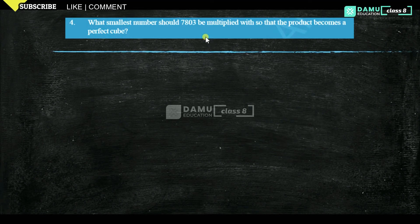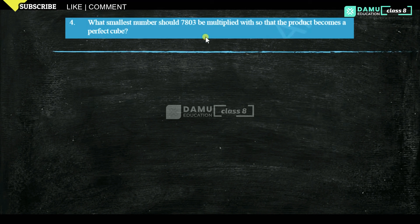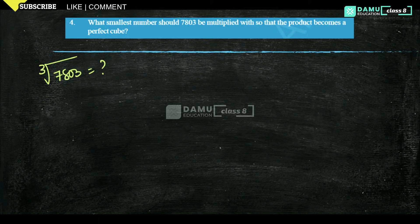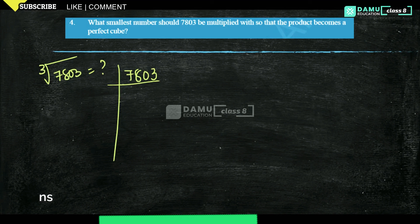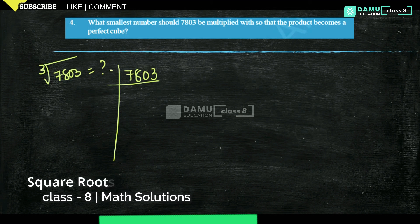In this next question: what smallest number should 7,803 be multiplied with so that the product becomes a perfect cube? For it to be a perfect cube, the cube root of 7,803 must be a whole value. Let us find out if 7,803 is a perfect cube or not. It is not divisible by 2, because 3 is in the units place.